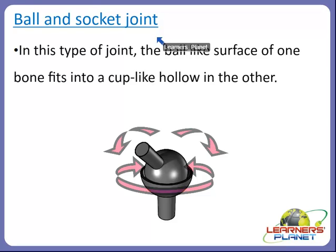Immovable joints are joints which don't move. The dome of the skull, for example, is made of bony plates which must be immovable to protect the brain. If the bones of the skull were movable, they could not protect the brain — that is why they are immovable. Between the edges of these bony plates are joints that protect the brain, and they are also present where they hold the teeth and the jawbone.